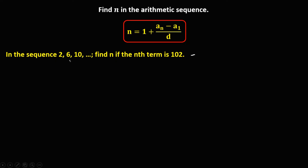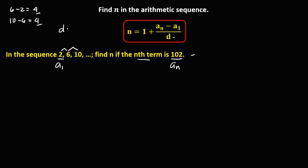For this problem, since this one is the first term, so this is a sub 1. And this one is the n-th term, so 102 is a sub n. Then for d, the common difference: from 2 to 6, we have 6 minus 2, that's equal to 4. And from 6 to 10, so 10 minus 6, that's equal to 4. So therefore, the common difference d is equal to positive 4.